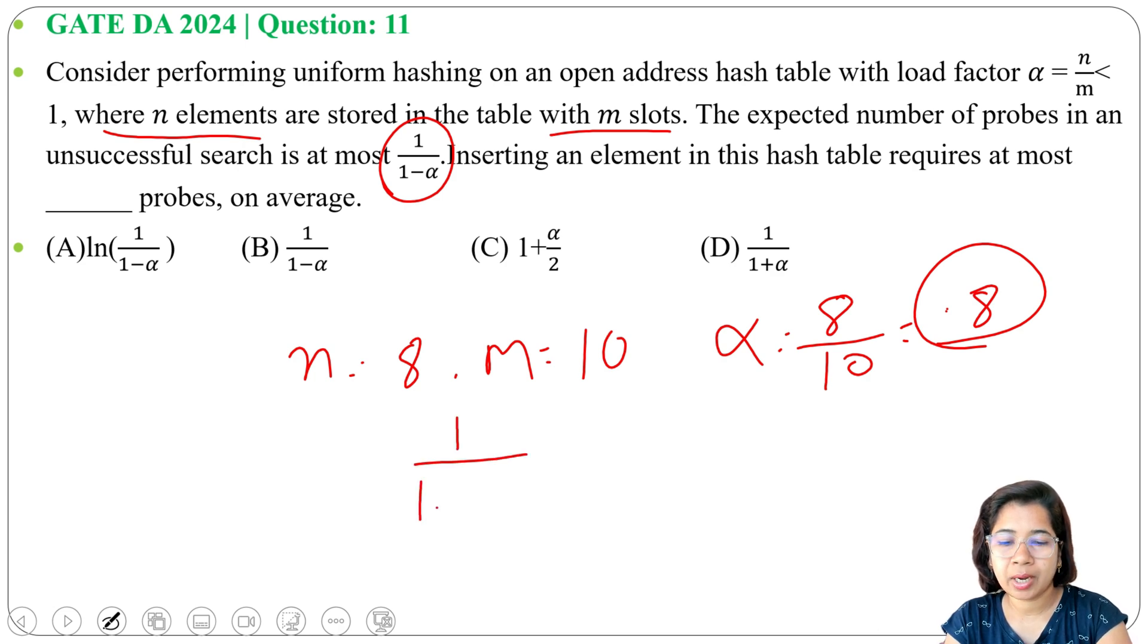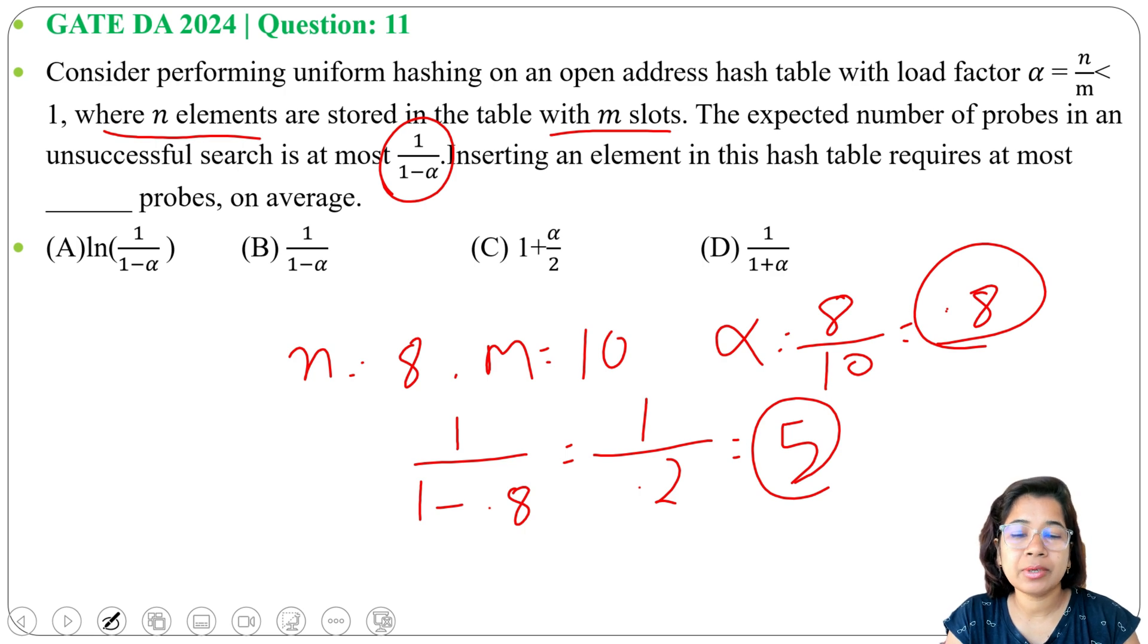So 1 divide 1 minus 0.8 it will be 1 divide 0.2, it's 5. So maximum 5 times we will check for an unsuccessful search.